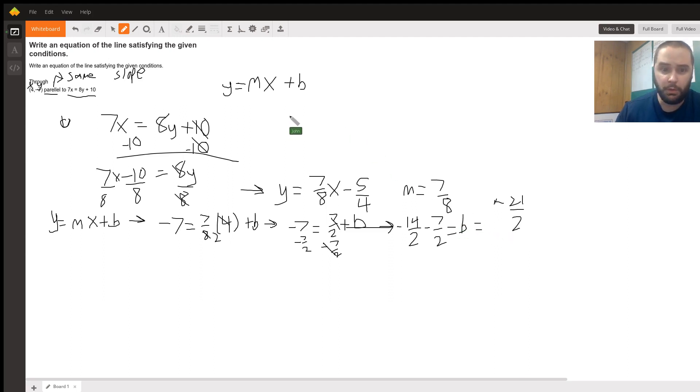So we have our b, we have our m. So y equals our m, which is 7/8x minus 21/2. There is the equation of your parallel line.